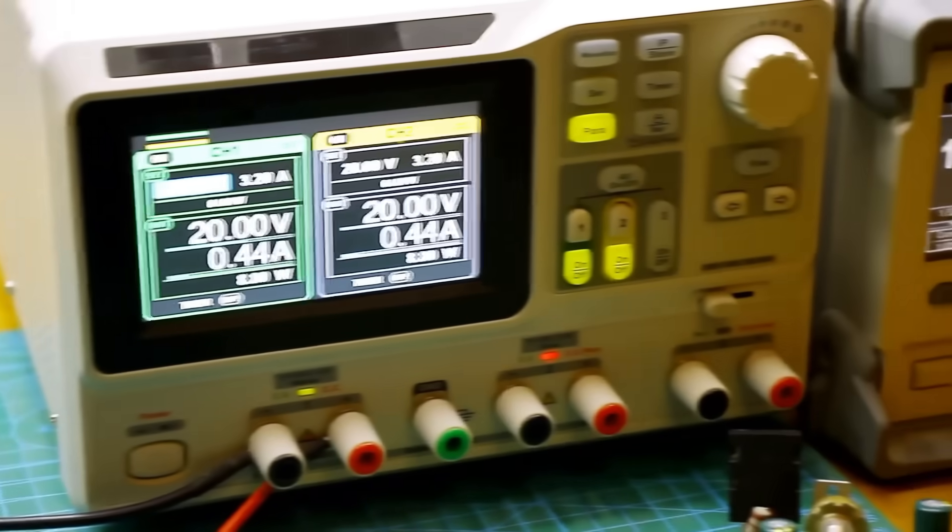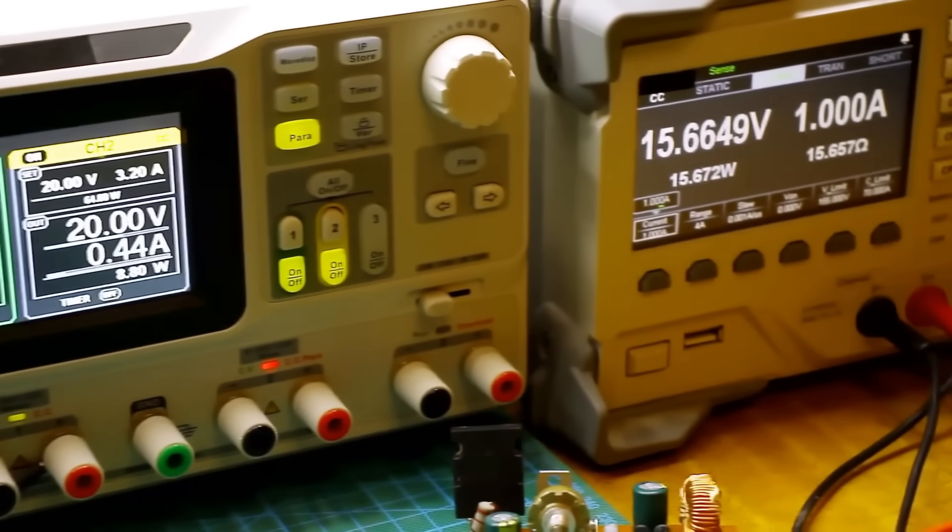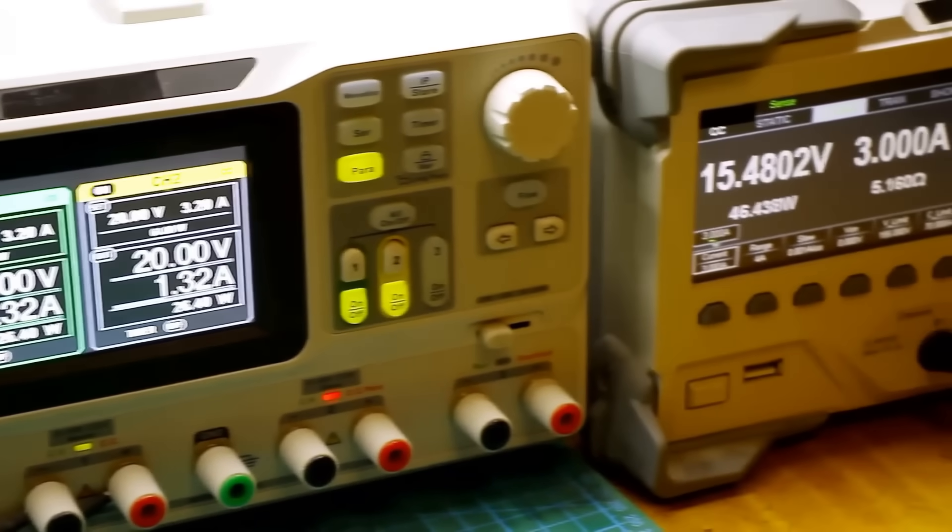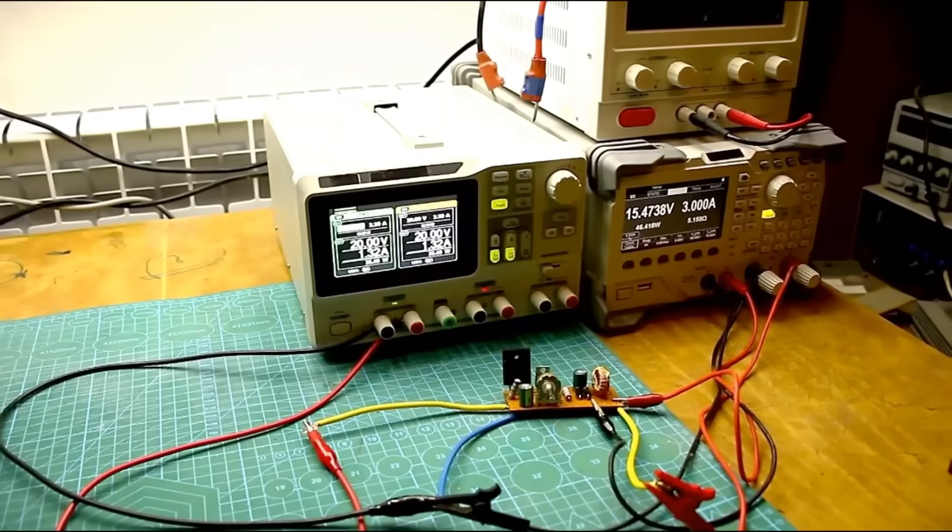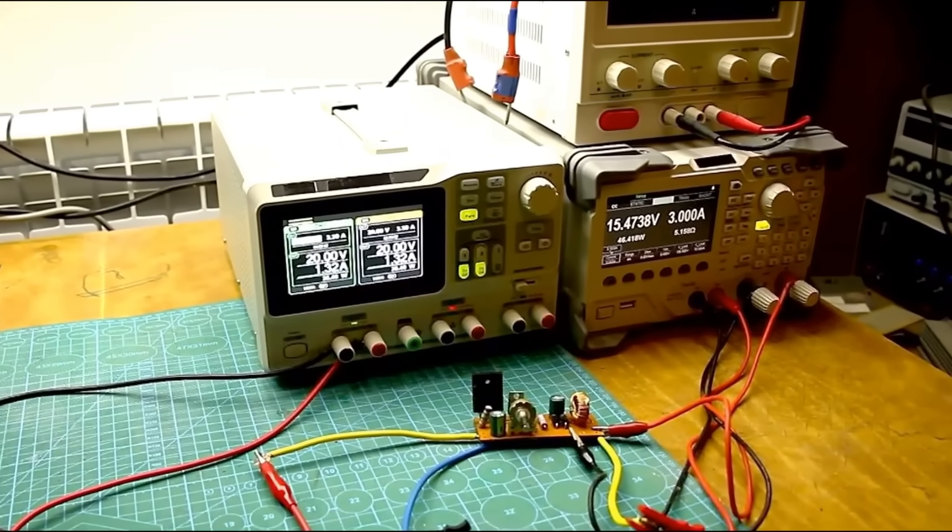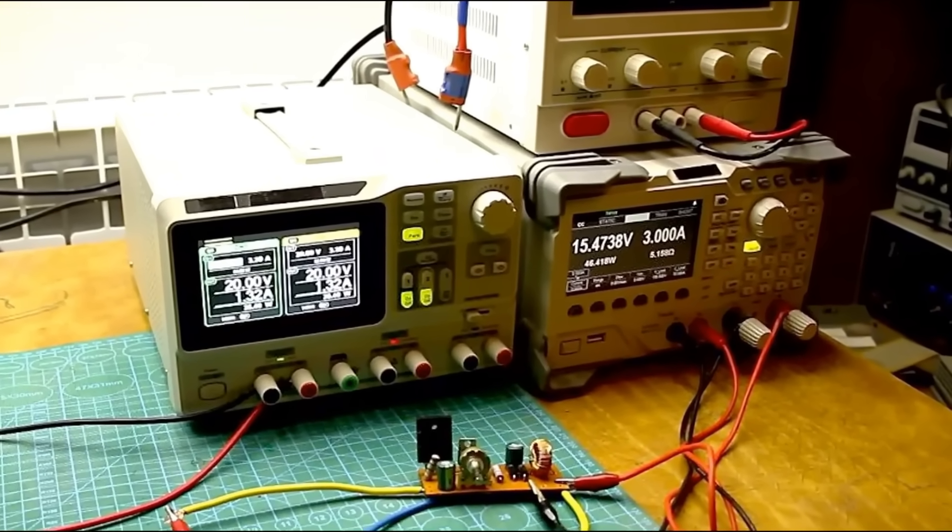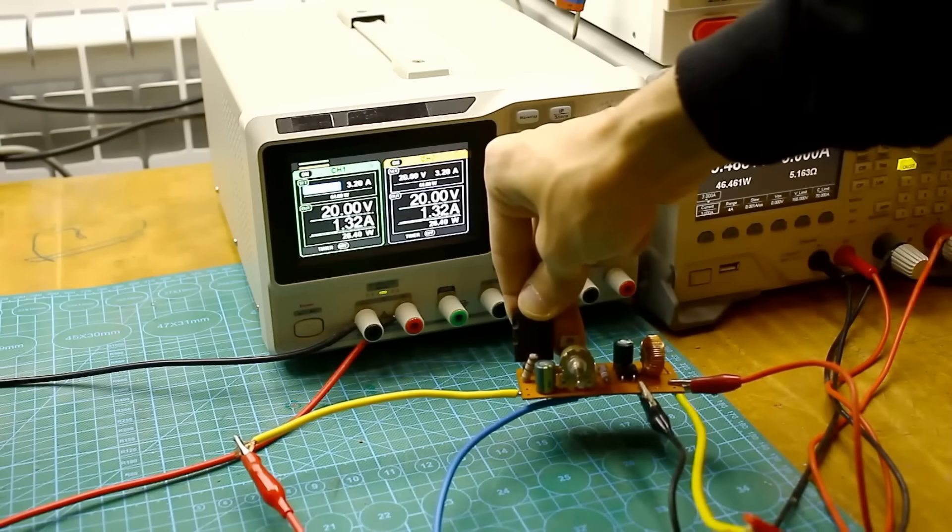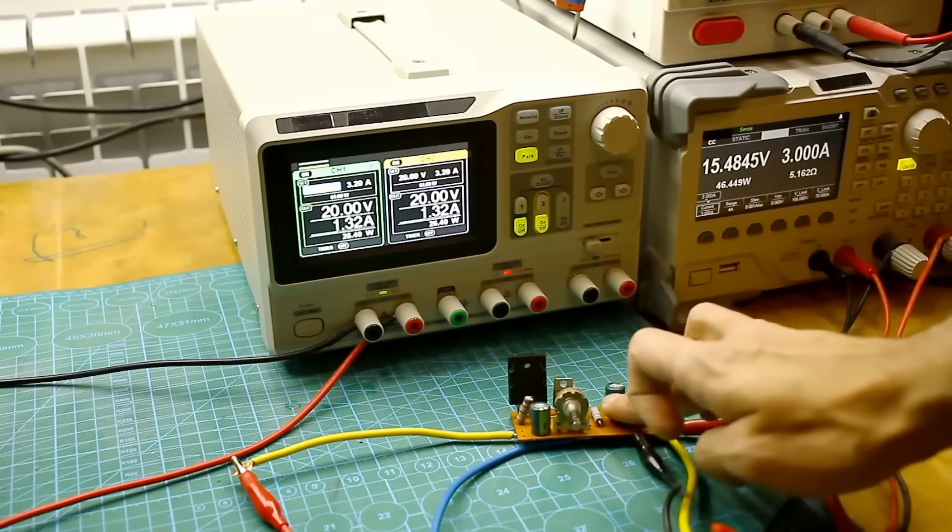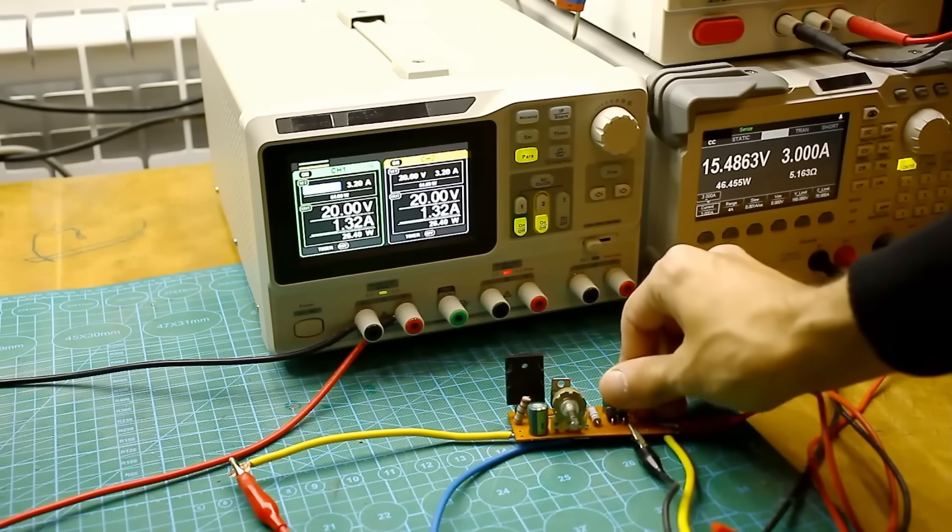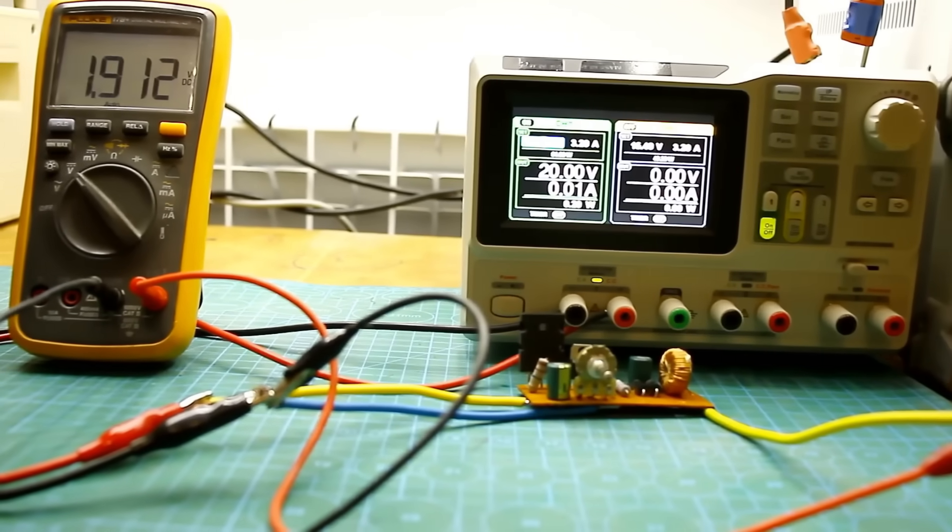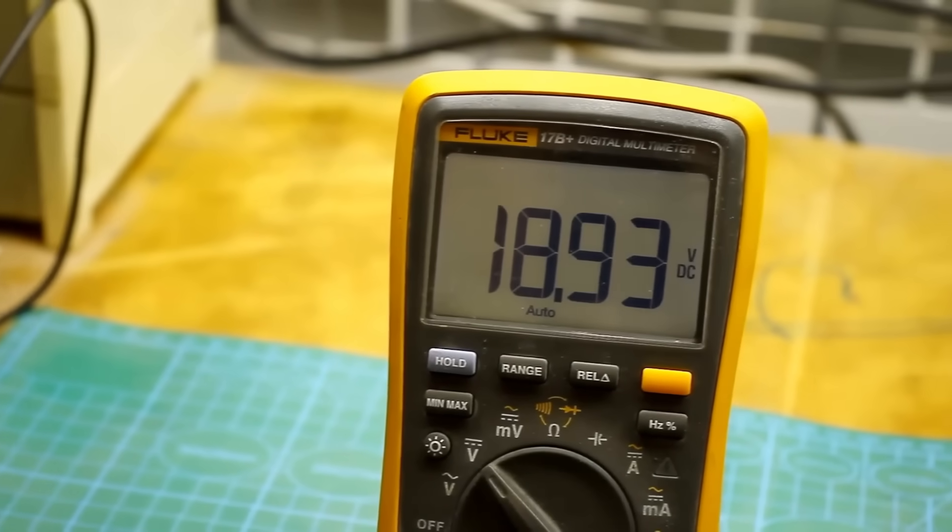During the measurements, I applied to the input of this regulator 20V and set 15V at the output. With an output current of 3A, the input consumption was about 50W and 46W at the output. The efficiency was approximately 88%. Undoubtedly, this is a very good indicator. At the same time, the transistor and the microchip do not heat up much. It's bearable to the touch. But it is necessary to mount them on a common heatsink and insulate the substrates from the heatsink with thermally conductive pads. The no-load current of the regulator is only 10 mA. Voltage adjustment from 1.25V. The maximum output voltage will be 1V less than the input.